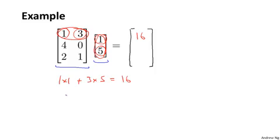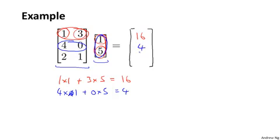Then for the second element, I'm going to take the second row and multiply by this vector. So I have 4 times 1 plus 0 times 5, which is equal to 4. And finally for the last element, I have 2 times 1 plus 1 times 5, which is equal to 7.